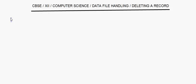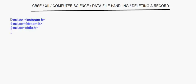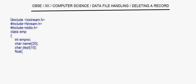We start with the headers: #include iostream.h, #include fstream.h, and #include cdiou.h. Now I'm taking the class Employee with member variables: int EMP_number, char name[20], char department[10], and float salary. Then we add two methods in the public declaration.